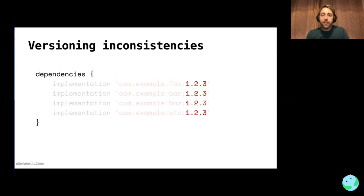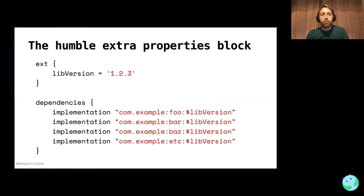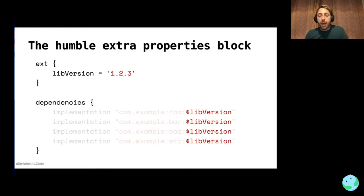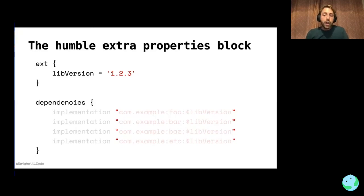Helpfully — and this is now the default in Android Studio when you create new projects — we can make use of the extra properties block. This block exposes your defined properties throughout your project. For example, if we simply define a lib version as a custom property, we can use string interpolation to apply this version across all dependencies. In Gradle, single quotes are treated as a regular Java string, whereas double quotes are used for string interpolation — a Groovy string, known as a G-string.